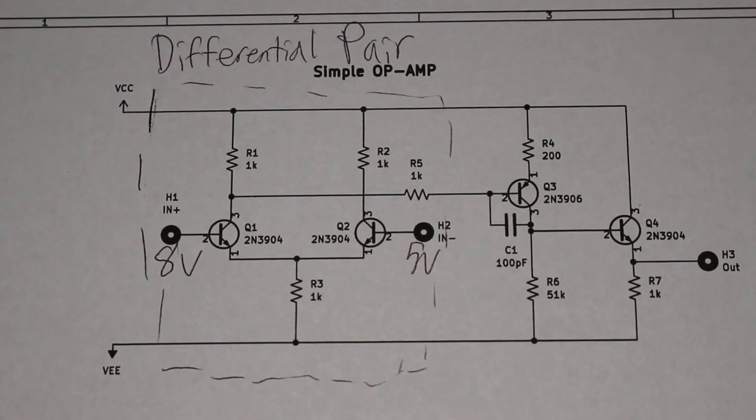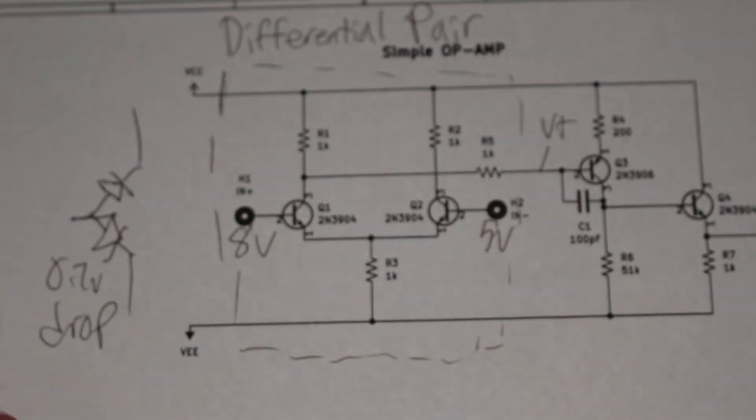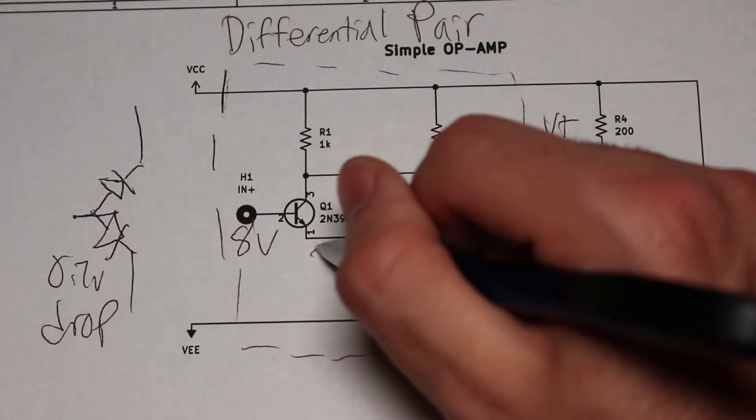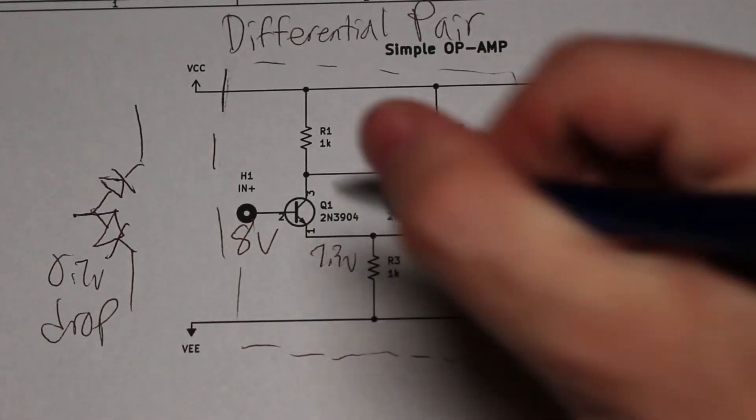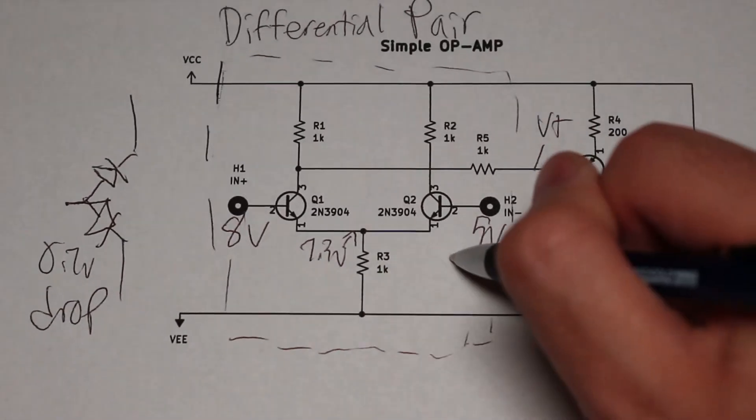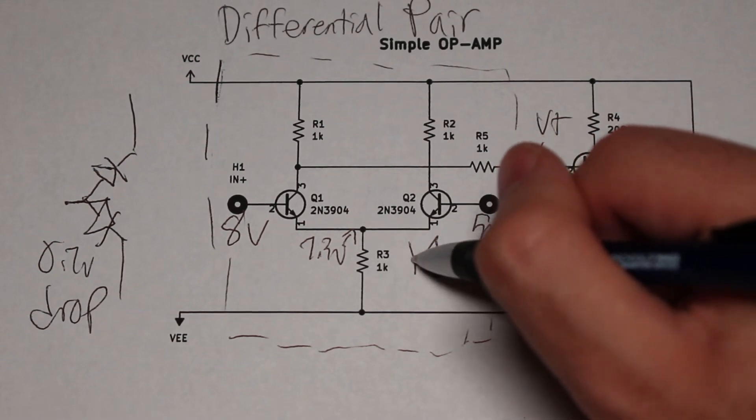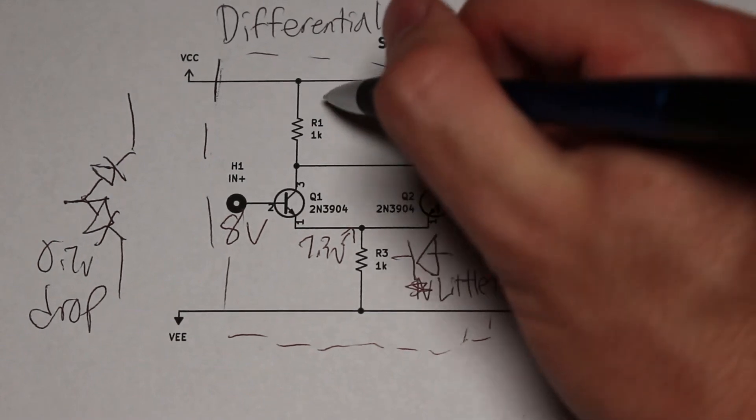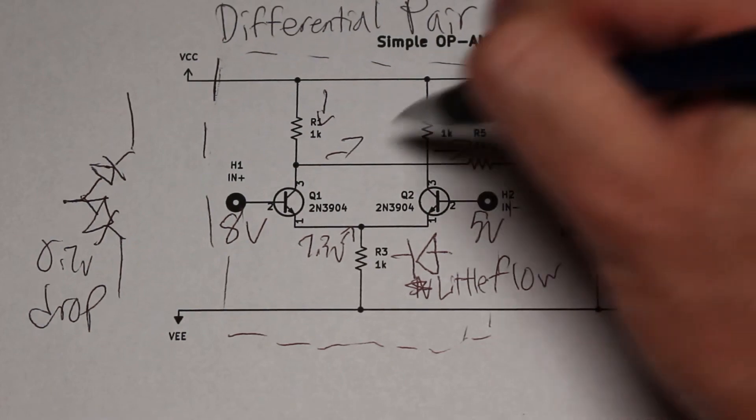The way this works is that since the transistor acts like two diodes in some ways, the emitter will be 0.7 volts lower than the base. The side with the higher input, in this case the non-inverting side, will determine the emitter voltage for both transistors. That means that barely any current will flow through the other transistor because its base is lower than its emitter. The output will be close to the positive rail because all of the current will be flowing through the non-inverting side. The same is true in the opposite configuration, just in the opposite order.